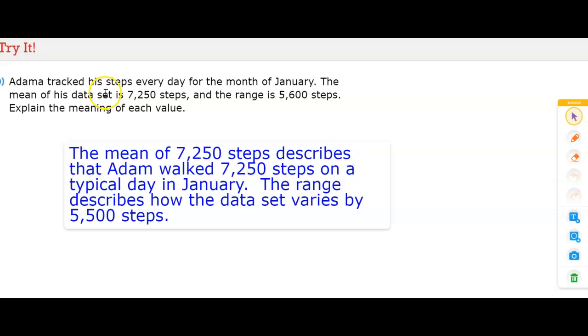Alright, for this I had to type it. That would have been a lot of writing. And the writing for me on here is not the best. I had to explain the meaning of each value. The mean of 7,250 steps describes that Adam walked 7,250 steps on a typical day in January. That's what the mean describes. The range describes how the data set varies by 5,500 steps. That's the range because it can go from anywhere between the two numbers. That's why it says varies. That is what you would have to write as an explanation of both mean and range in this situation.